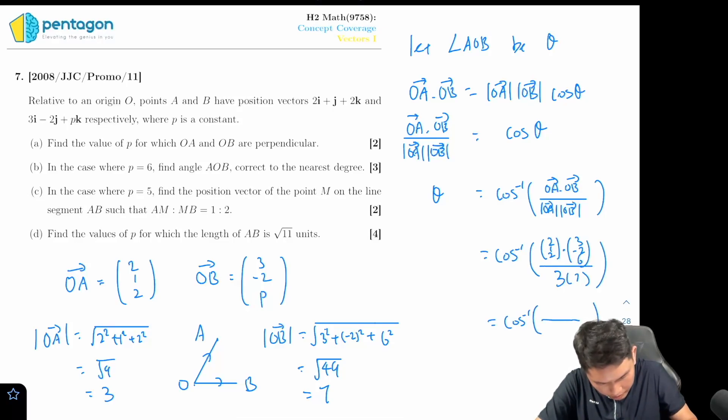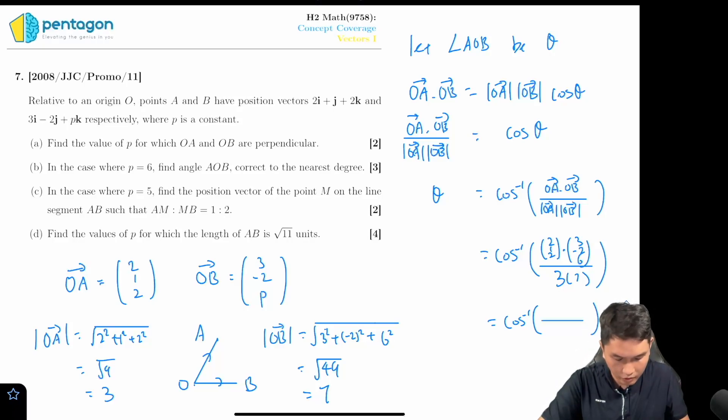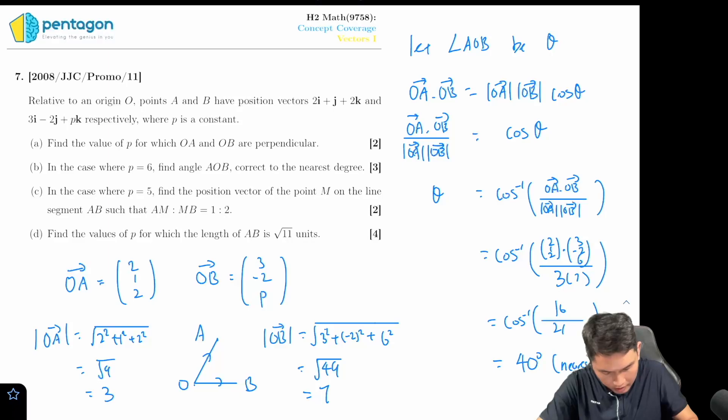So the dot product is going to be six minus two plus twelve, so that's 16 over 21. And if you do this, this will be around 40 degrees if you round it to the nearest degree, and that is the answer for part b.